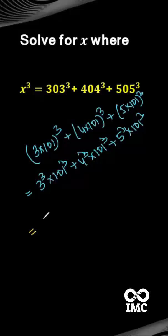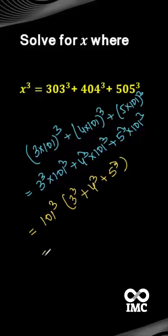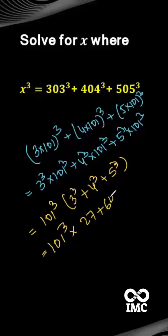Now if we take 101 cube as a common factor, we get 101 cube multiplied by the quantity 3 cube plus 4 cube plus 5 cube. Here 3 cube equals 27, 4 cube equals 64, and 5 cube equals 125.